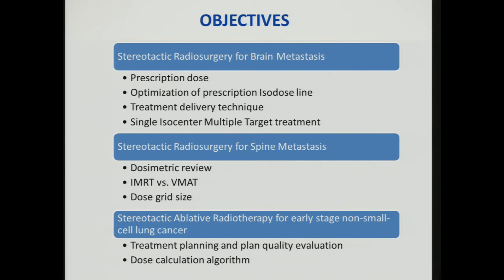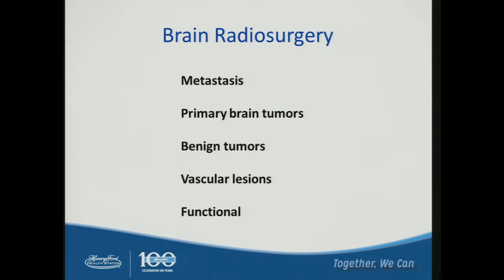We'll also talk about early-stage lung small cell cancer, treatment planning and planning evaluation, as well as dose calculation on grids. Brain radiosurgery has been developed for almost a century, working on brain metastasis, primary brain tumors such as GBM, benign tumors like pituitary gland and meningioma, vascular lesions like AVM, and functional diseases such as trigeminal neuralgia and Parkinson's disease.